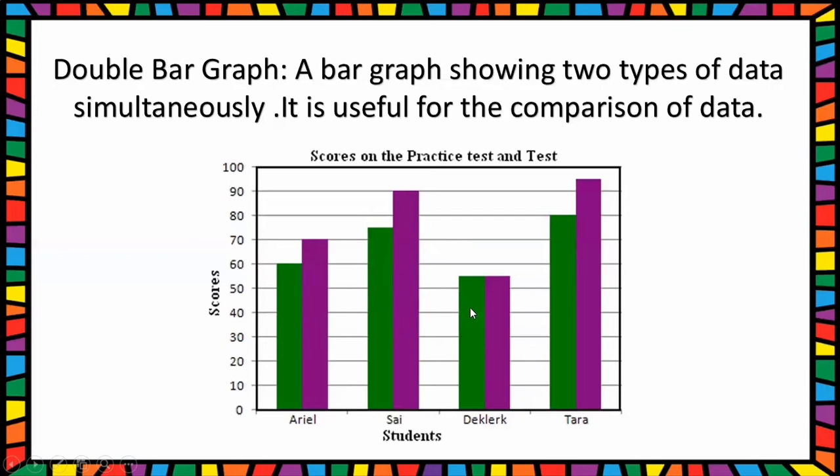Then Ducklark scored 55 marks in practice test and test also. Then Tara scored 80 marks in practice test and 95 marks in test, so Tara scored more marks in test. So this is very useful for the comparison of data. Hope it is clear.